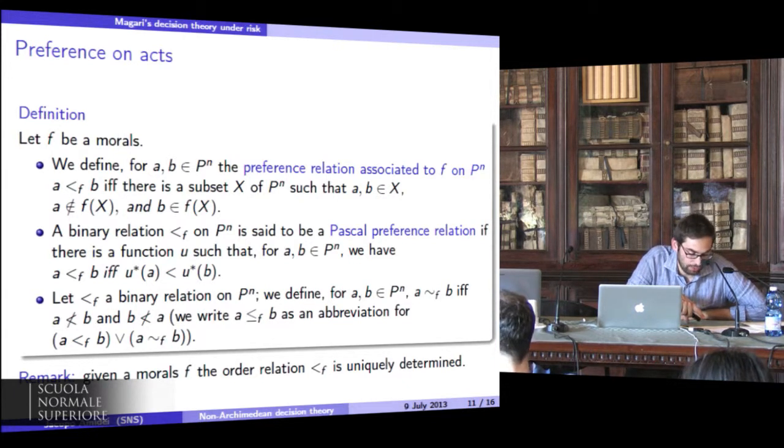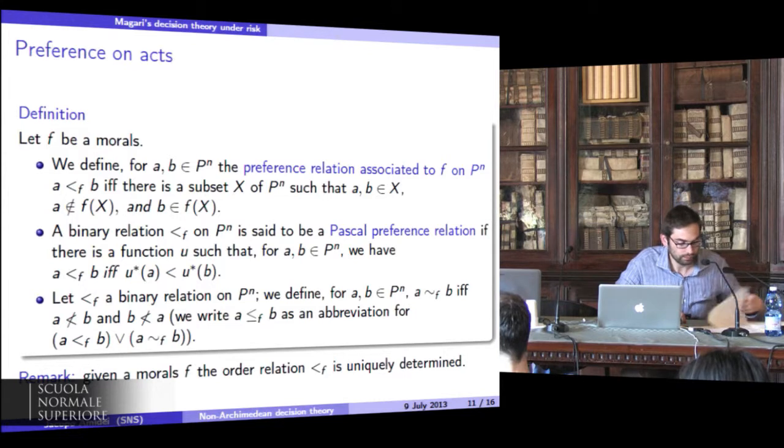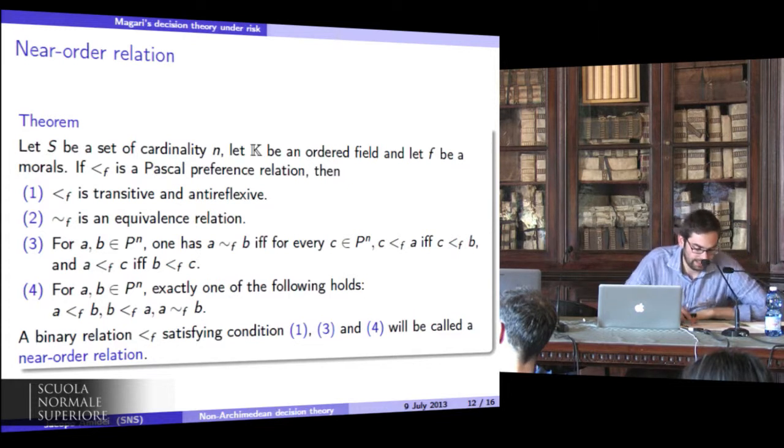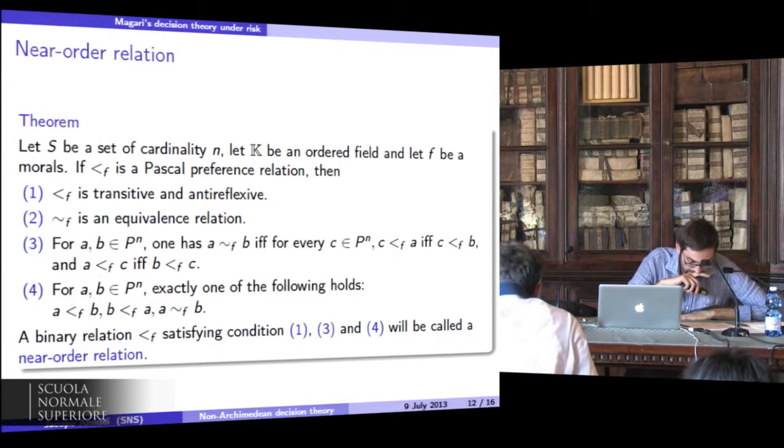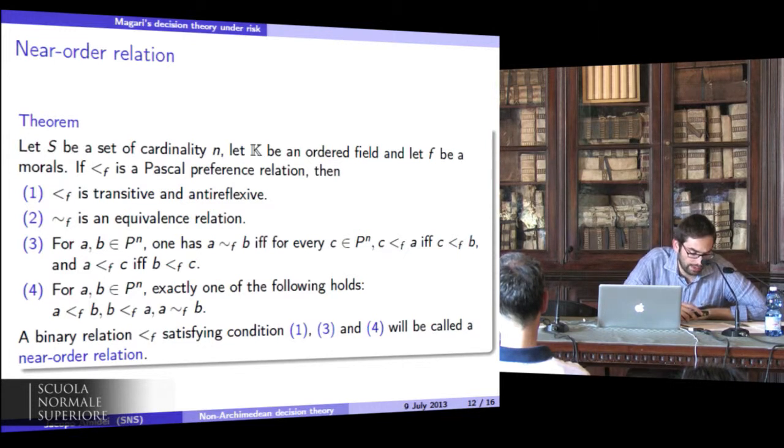We can define the indifference relation between acts by setting A is indifferent to B if and only if A is not preferred to B and B is not preferred to A. Given this definition, it can be proved that every preference relation is transitive and anti-reflexive, every indifference relation is an equivalence relation, two acts are mutually indifferent if and only if they have the same preference relationship compared to any other acts, and given two acts, they are indifferent or one is preferred to the other. A binary relation satisfying conditions 1, 3, and 4 will be called a near order relation.